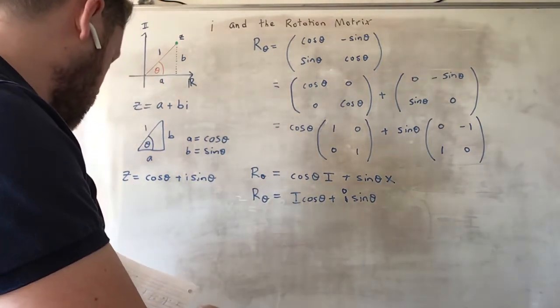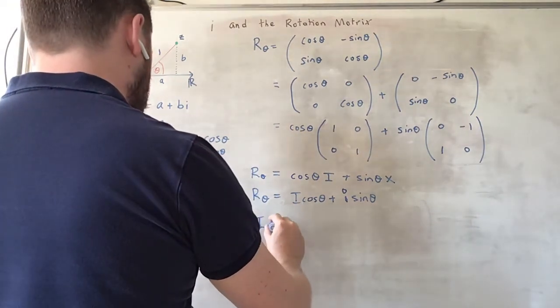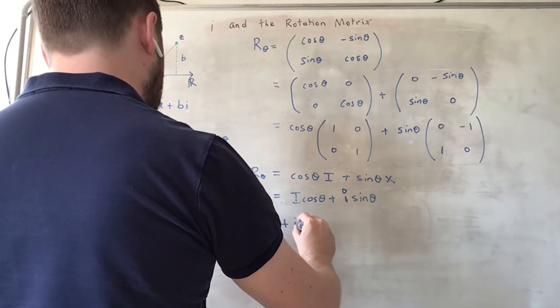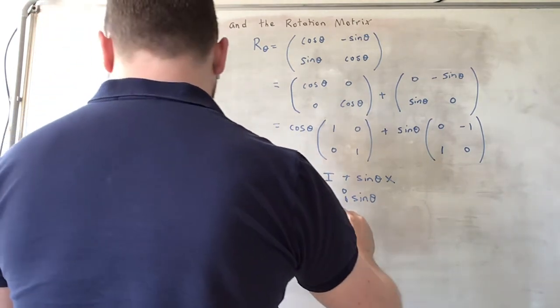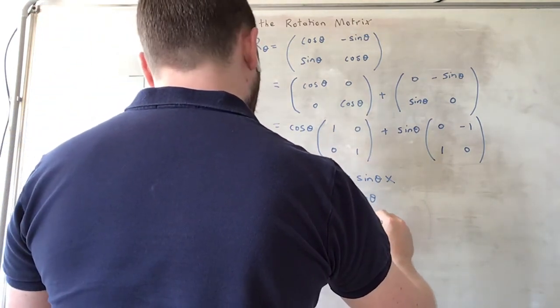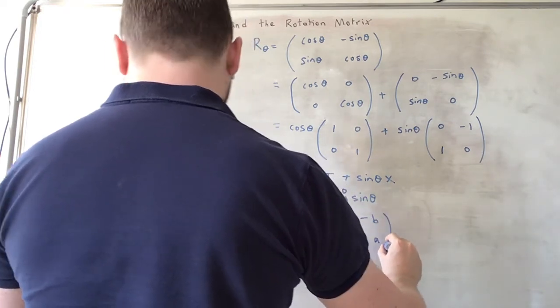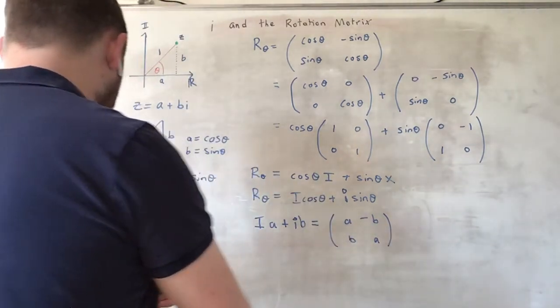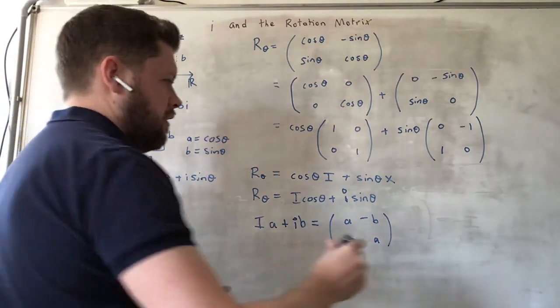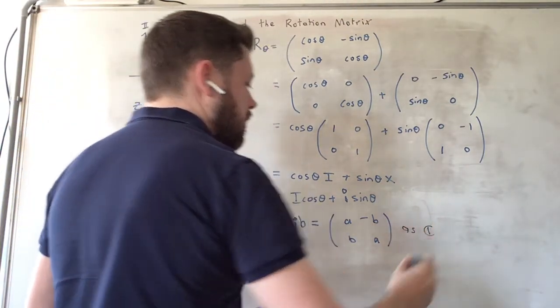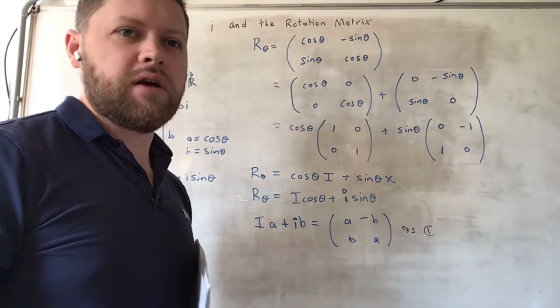So î(A) + î(B) equals (A, -B, B, A). This behaves exactly as a complex number. This matrix behaves identically as a complex number.